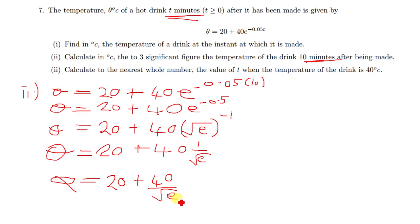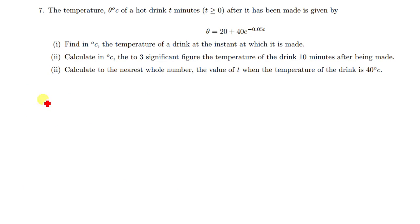Let's quickly move on to the third question on question 7, which says calculate to the nearest whole number. Here we're told to correct to three significant figures, but when you look at this we don't have a calculator. When you don't have a calculator, it's nearly impossible for us to find the root of e.